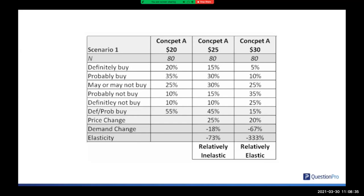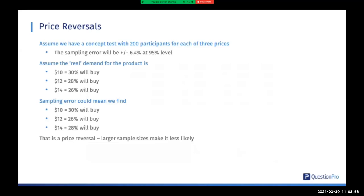When we go from $25 to $30, the price went up 20% but demand went down 67%, a ratio of -3.33 — that's relatively elastic. So on this sort of test, we would end up recommending $25 looks good, although demand is slightly higher at $20. We don't actually know whether $29 would be a really good place, because we only have three data points. We can get price reversals with this sort of test. Imagine we've done a concept test with 200 participants for each of three prices — with 200 participants, we have a sampling error at the 95% level of just over ±6%.